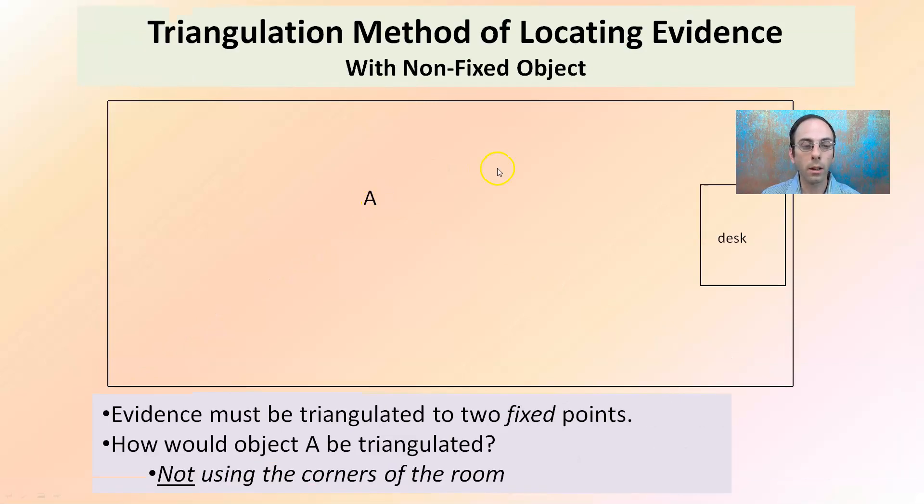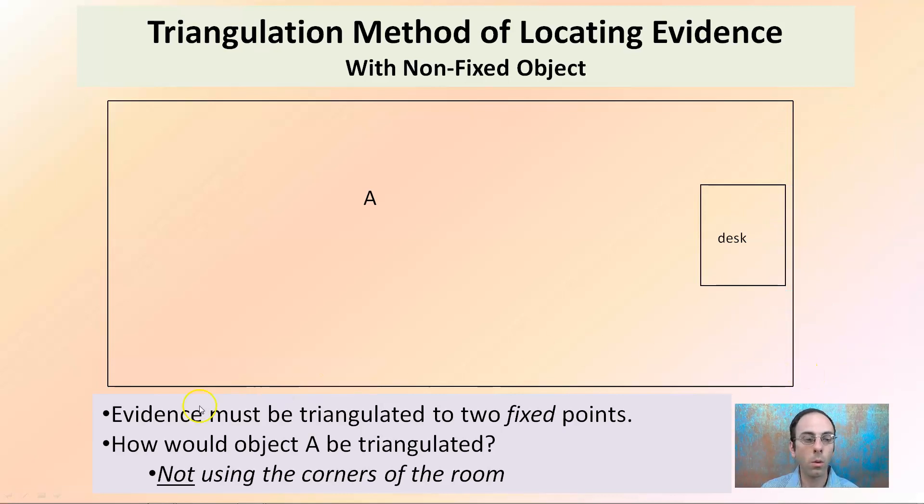Now what we're looking at and going through is triangulation without a fixed object. So now how do we triangulate for part A here? Evidence must be triangulated with two fixed points. How would object A be triangulated? Not from using the corners of the room. So we have our desk here. We're looking at triangulation without that fixed point.